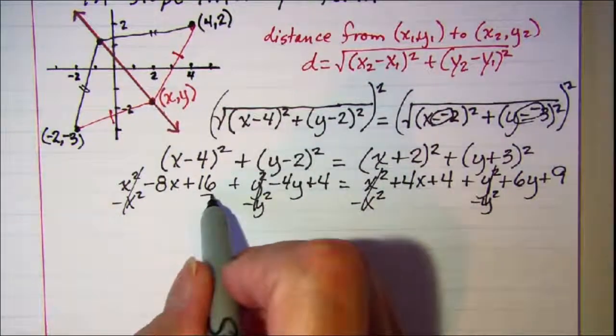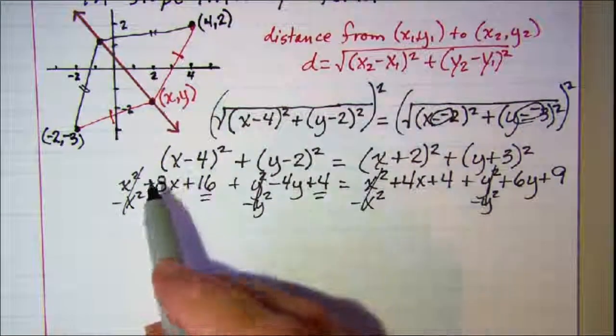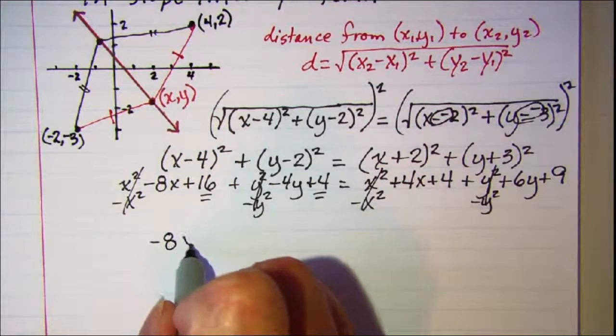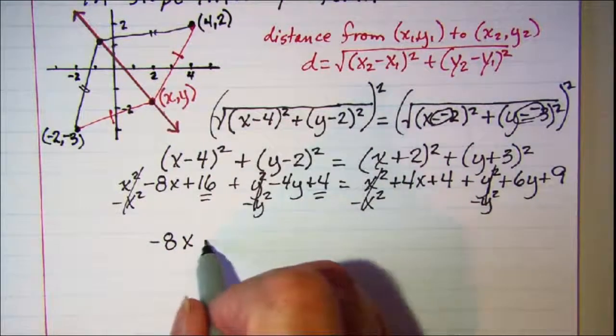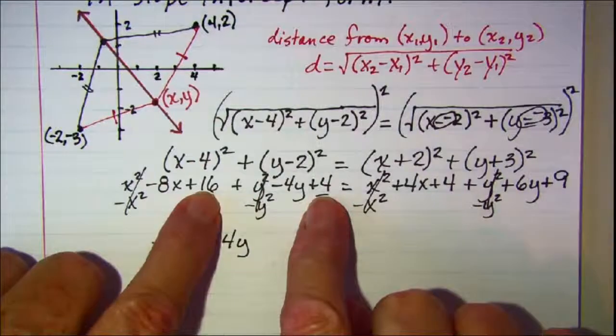Alright, then also let me go ahead and combine these constants that are on the left. So we have -8x - 4y and then 16 + 4 is 20.